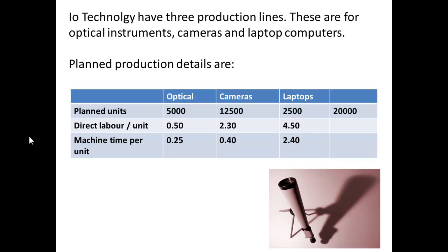Let's look at I.O. Technology, which had three production lines for optical instruments, cameras, and laptop computers. We have their planned production: 5,000 units of optical instruments, 12,500 cameras, 2,500 laptops — 20,000 units projected. The direct labour per unit for optical instruments is 0.5, the machine time per unit 0.25, and you can see similar figures for the camera and for the laptop.